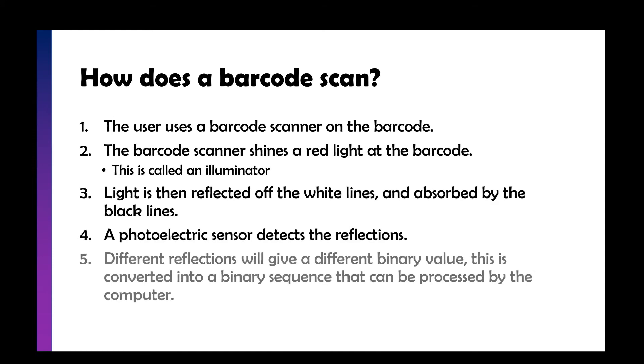Now if you get an exam question, there's sort of a set menu answer we can use. The user uses the barcode scanner on the barcode. The barcode scanner shines red light at the barcode. That light itself is called an illuminator. Light is then reflected off the white lines and absorbed by the black lines. And a photoelectric sensor, or you can just say a light sensor, detects these reflections. And because the widths of the lines are all different, they all represent a different binary value, which gets converted into a binary sequence or a bit pattern that the computer can then use in its database.